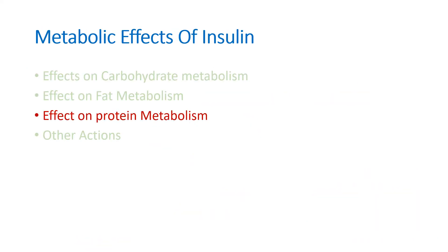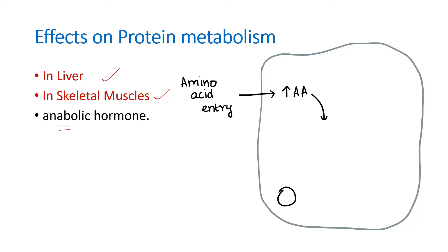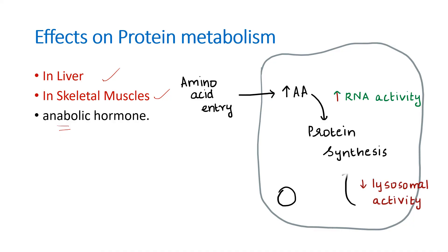The third effect of insulin is on protein metabolism. The main organs involved are the liver and skeletal muscle. Insulin is an anabolic hormone — it helps in protein synthesis and protein buildup. It stimulates the entry of amino acids into both liver cells and muscle cells, and by increasing amino acid availability, it stimulates protein synthesis by increasing RNA activity. Insulin also decreases lysosomal activity, resulting in decreased proteolysis. By both these actions, insulin increases protein synthesis.